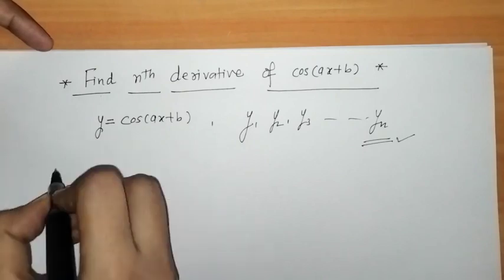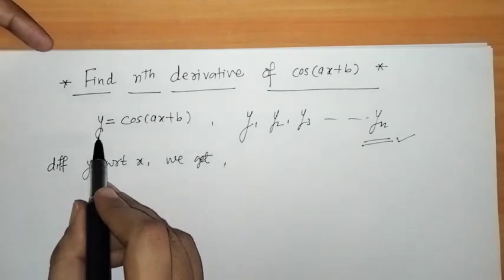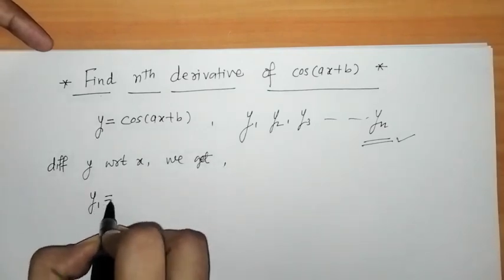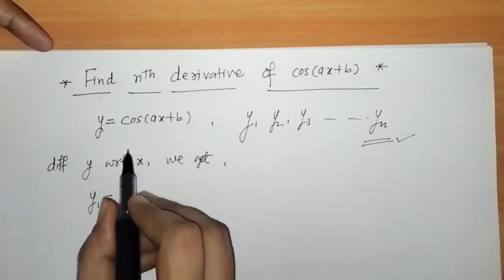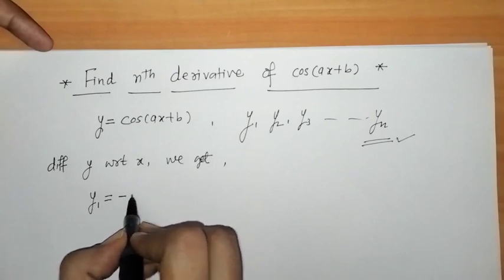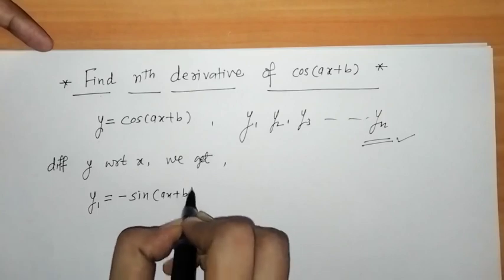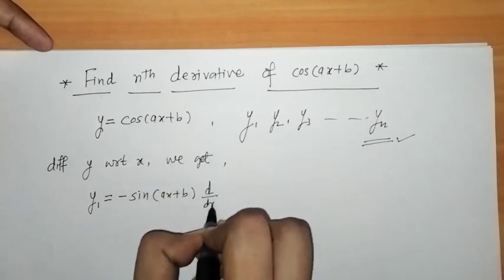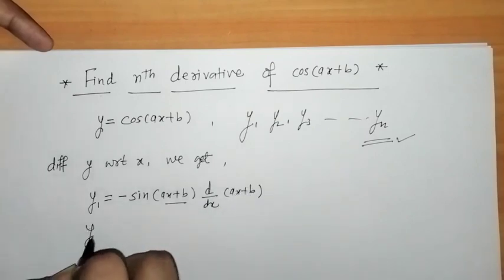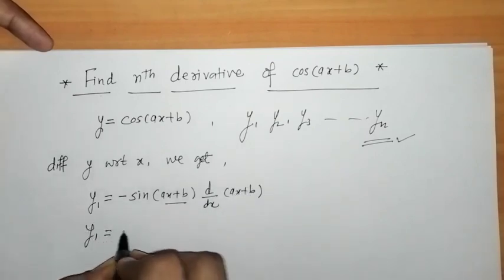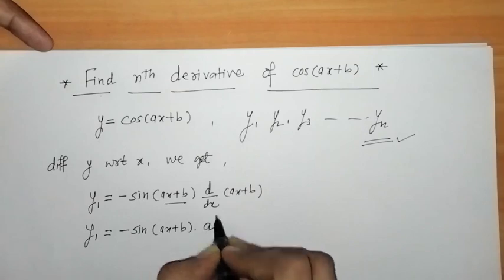Let us differentiate y with respect to x. By differentiating y we get y1. The derivative of cos is minus sin of (ax + b), and since this is a function of a function, we also take the derivative of (ax + b). So we get y1 = -sin(ax + b) · a.